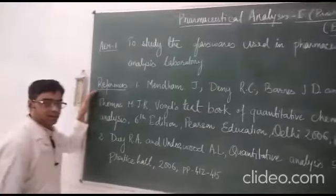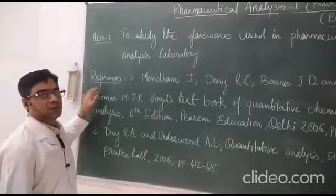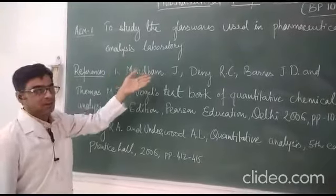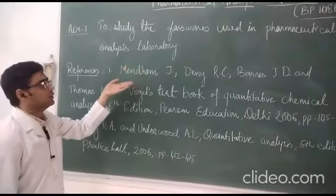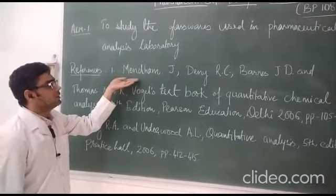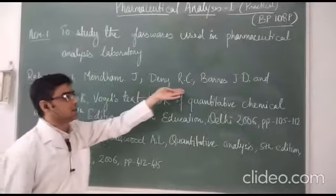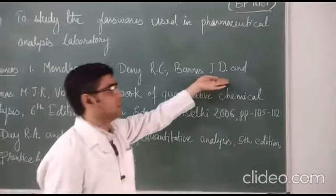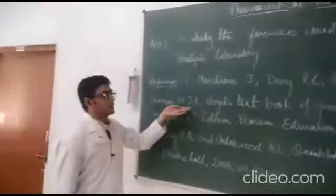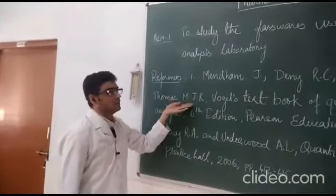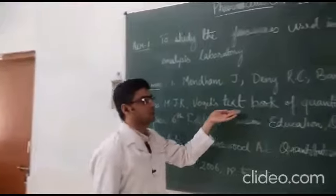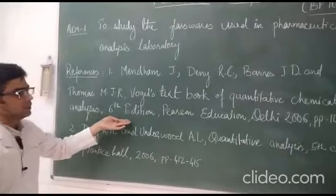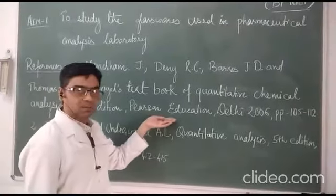Now we come to references — the books taken as reference for this experiment. The first reference authors are Mantel J., Denny R.C., Barry J.D., and Thomas J.K. — four scientists who wrote this book. The name of the book is Vogel's Textbook of Quantitative Chemical Analysis, sixth edition, published by Pearson Education.